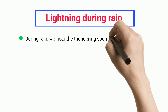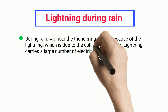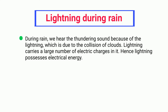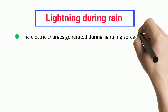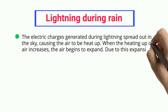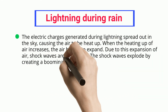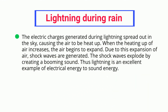During rain, we hear thundering sound because of lightning, which results from the collision of clouds. Lightning carries a large number of electric charges, thus possessing electrical energy. The electric charges generated during lightning spread out in the sky, causing the air to heat up. As the air expands due to heating, shock waves are generated, which explode creating a booming sound. Thus lightning is an excellent example of electrical energy to sound energy conversion.